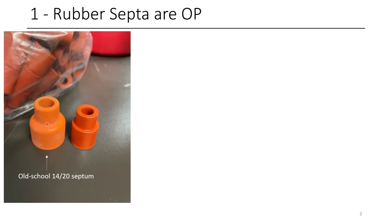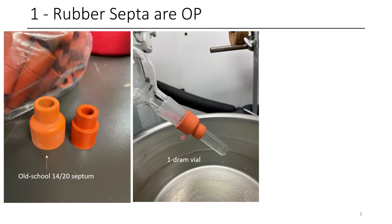Now the cool thing about these older ones is they're basically more valuable than gold. You can attach them onto a one dram vial like this, where you put the 14/20 part around the outer part of the vial where the cap would go. And then you stick a needle in.